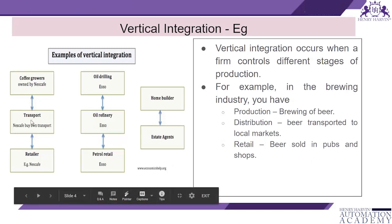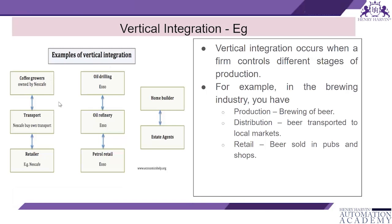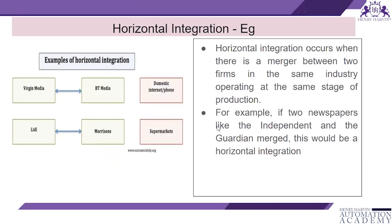You can see through a visual diagram how vertical integration is happening in various domains such as coffee growers, oil drilling, and home builders. Horizontal integration occurs when there is a merger between two firms in the same industry operating at the same stage of production.